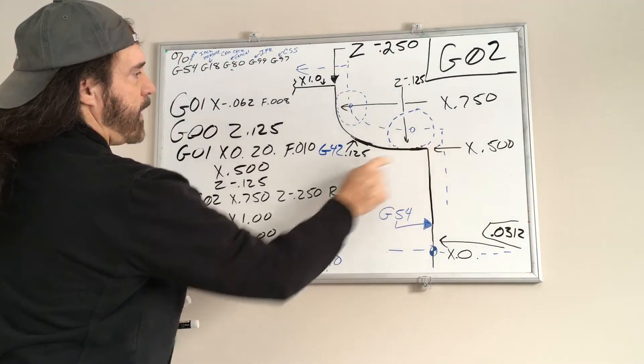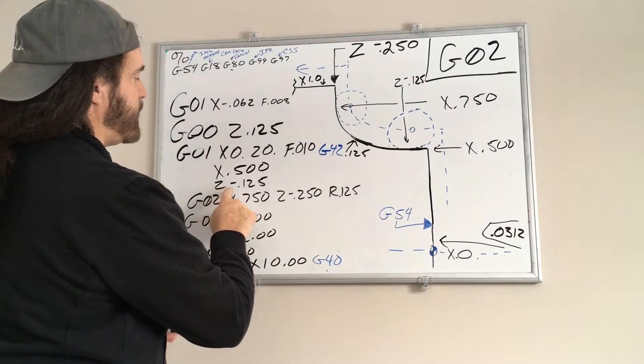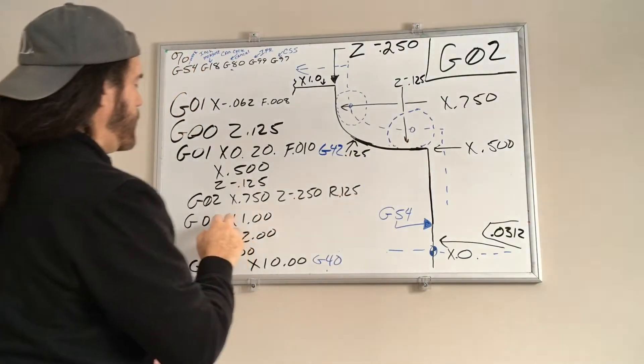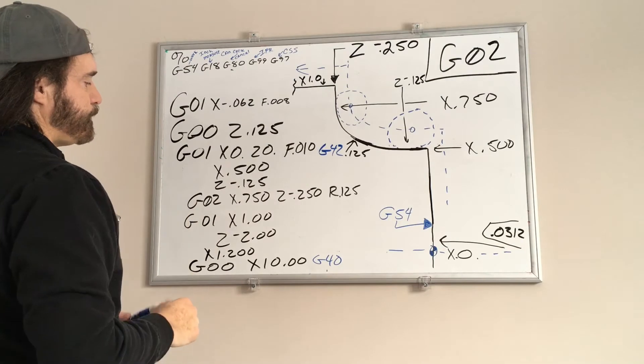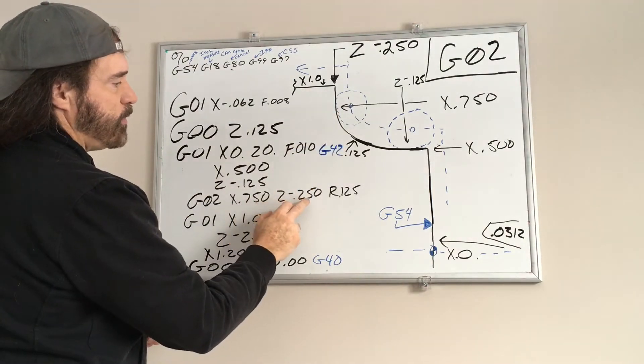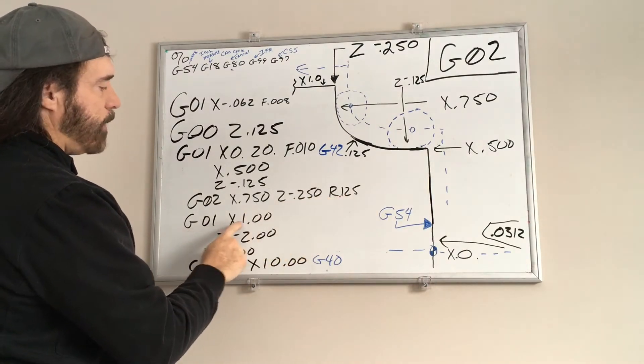Now I'm going to go into Z negative one two five, feed in. And now I'm going to turn on the G02. So I want to get to X point seven fifty, Z negative two fifty with a radius of one two five. I'm going to feed up to X one point zero because after you made your clockwise move, you have to go back into linear moves.